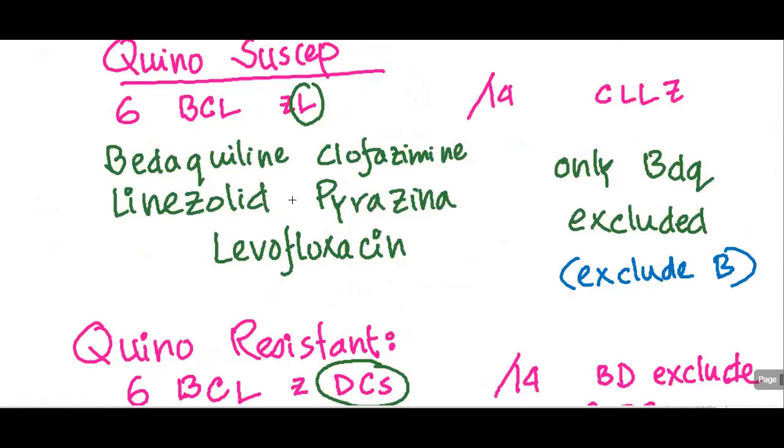So let's talk about them in detail. So in quinolone susceptible people, you have to use levofloxacin, which is a quinolone. And the main drugs in the intensive phase is the BCL-ZL. And the BCL, as I mentioned before, bedaquiline, clofazimine, linezolid. Those three are the main structures. BCL. And then pyrazinamide and then levofloxacin is the last L.